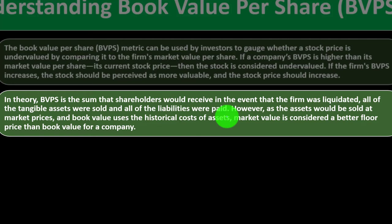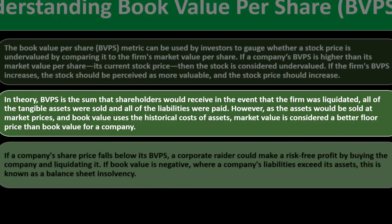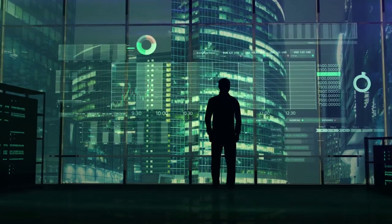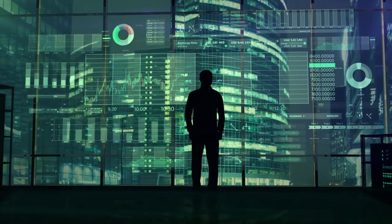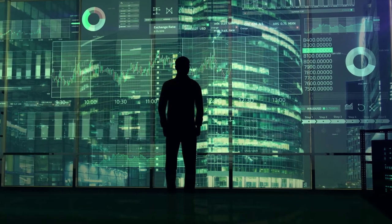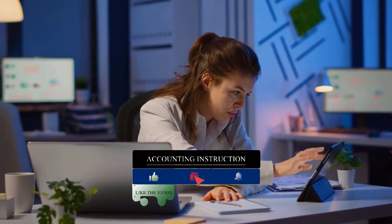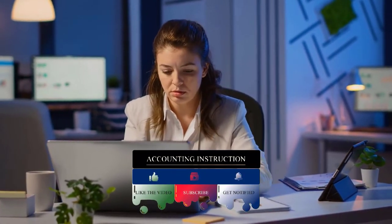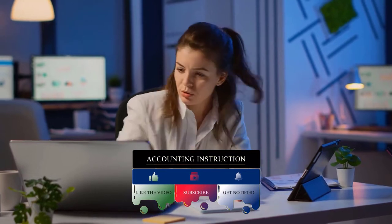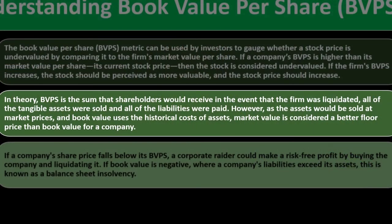However, as assets would be sold at market prices, book value uses the historical cost of assets, so market value is considered a better floor price than book value for a company. When using accounting terms for property, plant, and equipment, you use depreciated cost instead of current value. Buildings are unique — you don't really know their value until you sell them — which is one reason why depreciable cost makes sense for certain asset types. This makes it difficult to know the actual value if you were to liquidate.